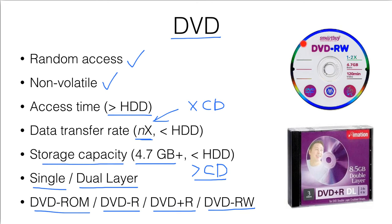A DVD rewritable means that after we have written data on the DVD and if we change our mind, we can simply erase the whole disk so that it becomes a blank disk. This DVD plus recordable disk supports double layer, so the storage capacity is 8.5 gigabytes. Usually these DVD disks are for recording TV programs or football matches using a DVD disk recorder.